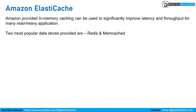Amazon ElastiCache provides in-memory caching that can be used to significantly improve latency and throughput for many read-heavy applications. The two most popular data stores provided are Redis and Memcached.